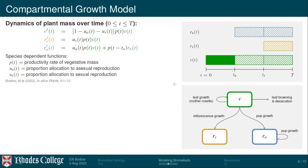Now I'll switch to a compartmental model of growth. Rather than just tracking longest leaf length, this model tracks total plant mass broken into different compartments: vegetative mass — the photosynthesizing leaves — and reproductive mass, which is further divided into sexually reproductive mass, the inflorescence where the flowers are, and asexually reproductive mass, the pups. We parse these out in time: at the beginning there is only vegetative growth, then pups begin growing as well, and finally all compartments are active.